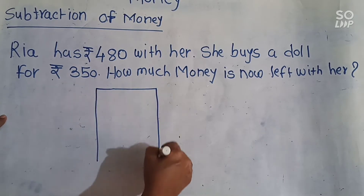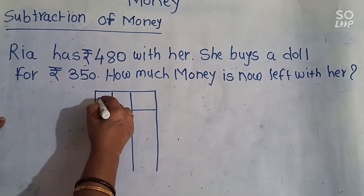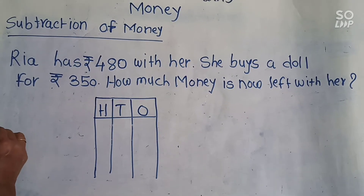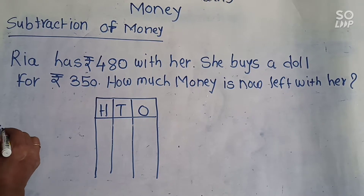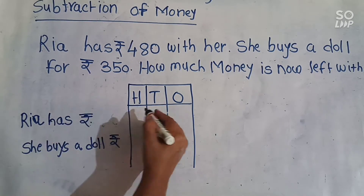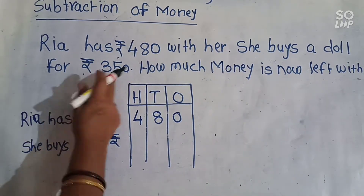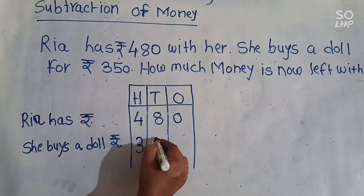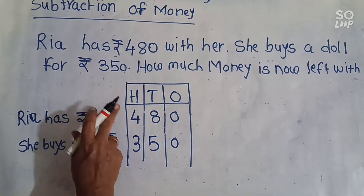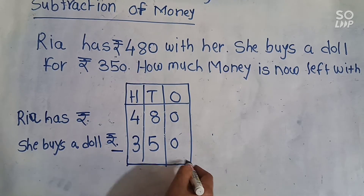Let's write in the format. Rhea has rupees 480. She buys a doll for rupees 350. How much money remains? We have to do subtraction, so put the sign of subtraction here.